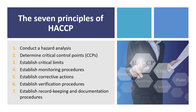After the five preliminary tasks are completed, the seven principles of HACCP can be applied to ensure safe food production. Principle 1: Conduct a hazard analysis. Principle 2: Determine the critical control points (CCPs). Principle 3: Establish critical limits. Principle 4: Establish a system to monitor control of the CCP. Principle 5: Establish the corrective action to be taken when monitoring indicates that a particular CCP is not under control. Principle 6: Establish procedures for verification to confirm that the HACCP system is working effectively. And Principle 7: Establish documentation concerning all procedures and records appropriate to these principles and their application.